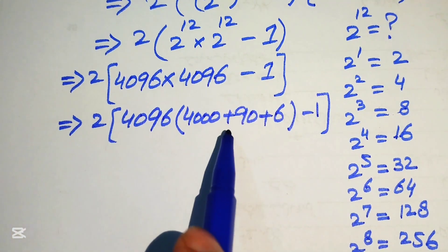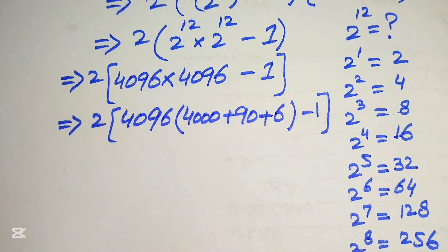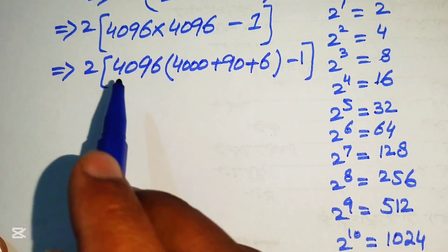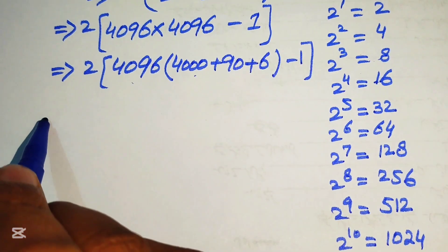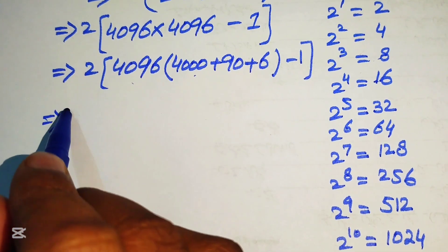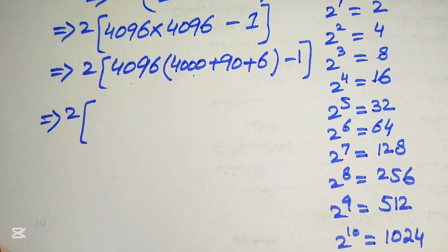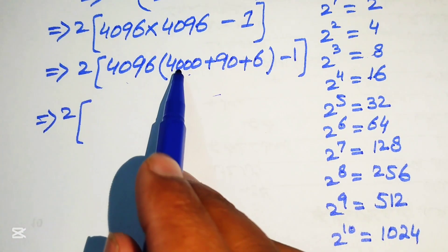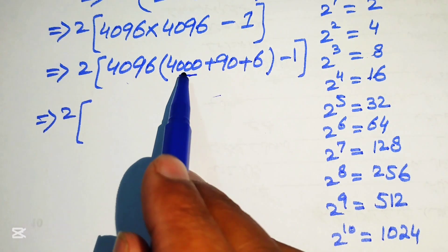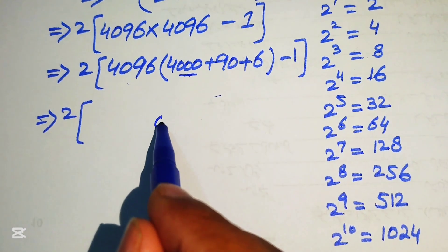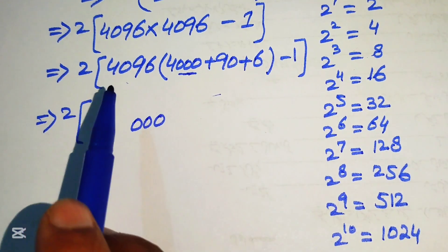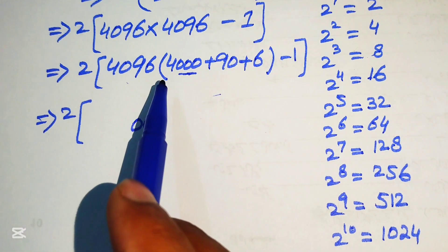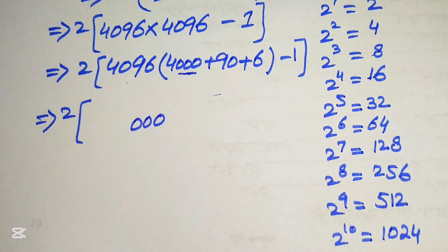We can write 4096 in this form. To multiply 4096 with each part, we use the traditional method of multiplication. To find the product with 4000, first eliminate the three zeros, multiply 4096 by 4 only, then write those three zeros back.